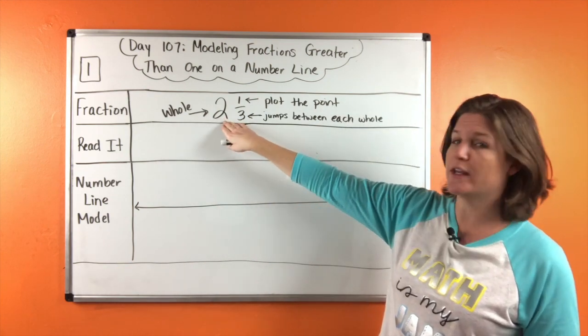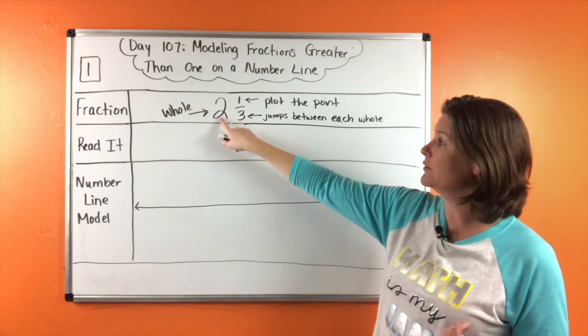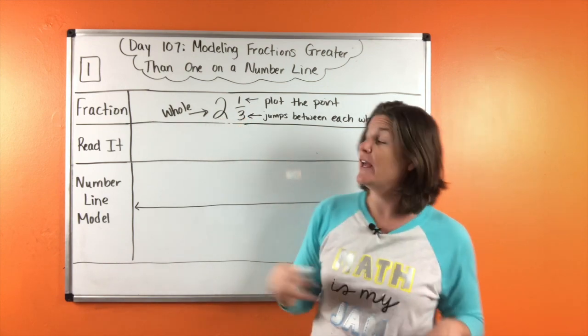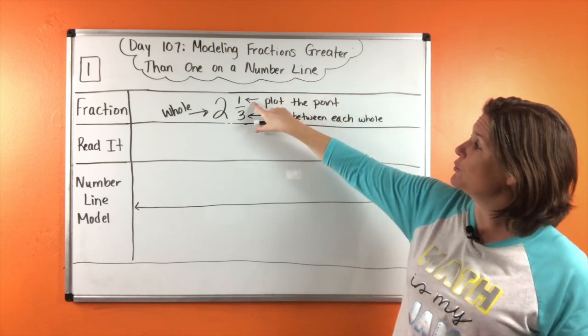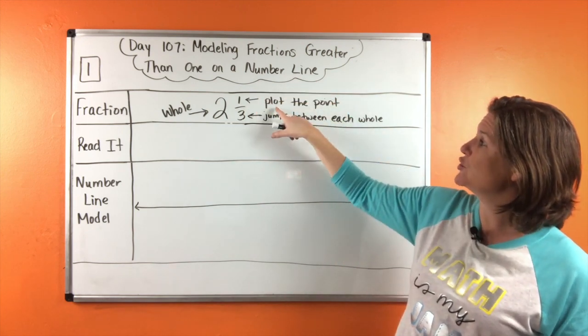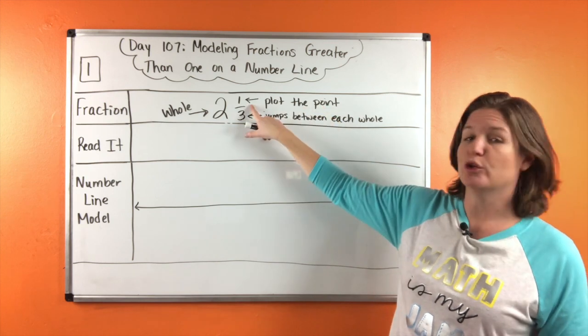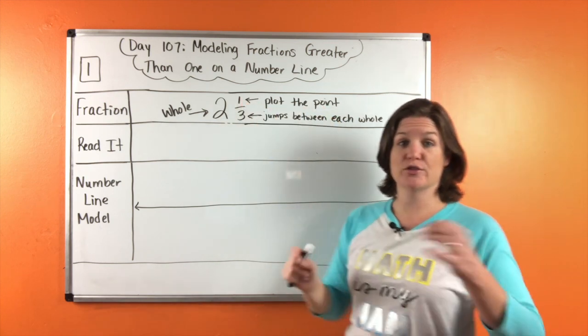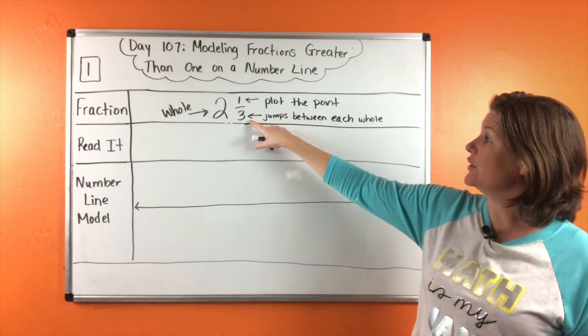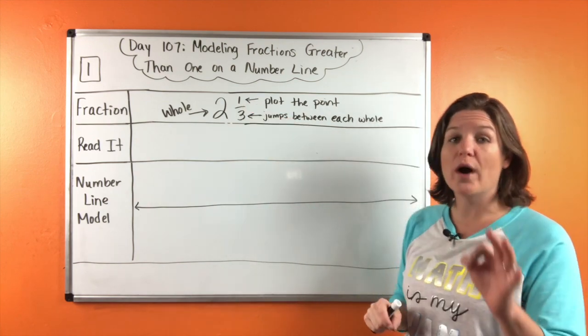So for number one, we have a mixed number. Two is the whole number and one third represents the fraction. Now for the numerator, I wrote a little note to plot the point. We are going to plot the point at this numerator, two and one third. That's where our point is going to go, is on the one for the one third.